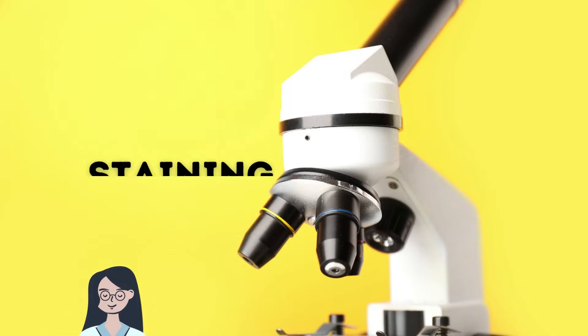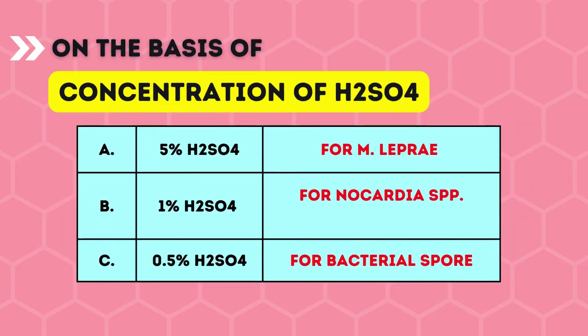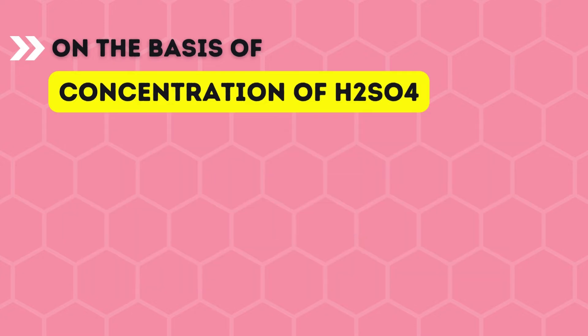First we see the modifications of the ZN staining. There are various aspects. The first aspect is based on the concentration of H₂SO₄. These modifications include: first, the use of 5% H₂SO₄ instead of 20% H₂SO₄ which is used in the standard ZN stain — the 5% is used for Mycobacterium leprae. Second, 1% H₂SO₄ is used for Nocardia species. Third, 0.5% H₂SO₄ is used for bacterial spores.